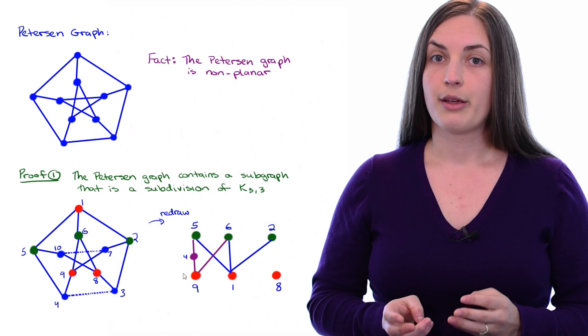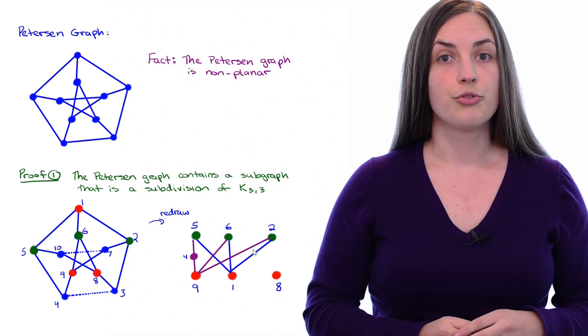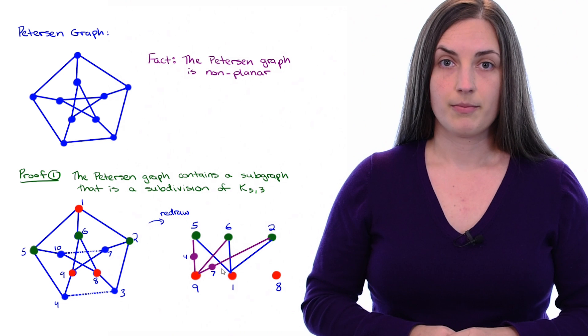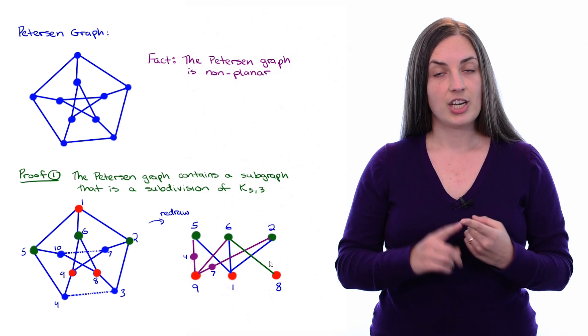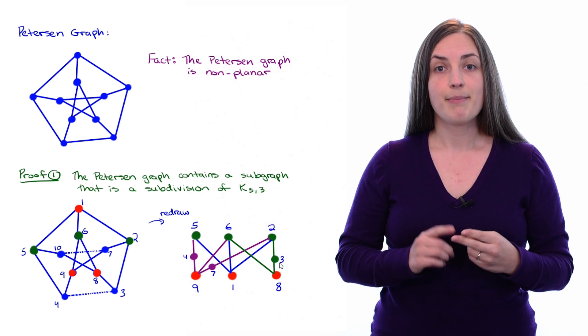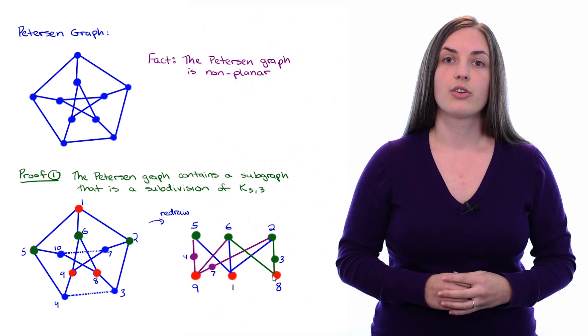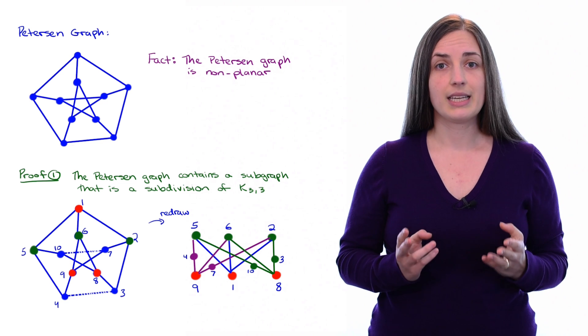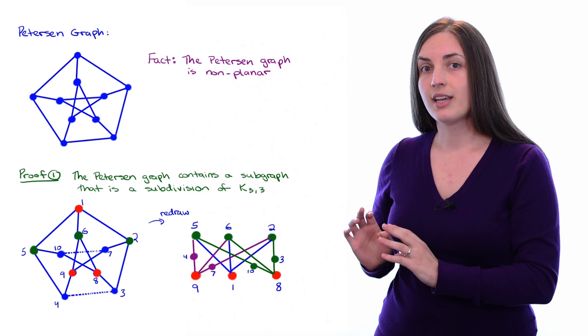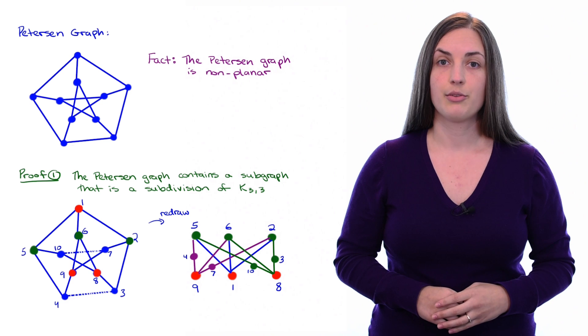Also, there's a path going from vertex nine to vertex two going through vertex seven. Similarly, if I look at vertex eight, I will notice that it's either adjacent or has a path to each of those green vertices. So I'll draw that in as well. Now it's really clear that the subgraph we were looking at is indeed just a subdivision of K₃,₃.